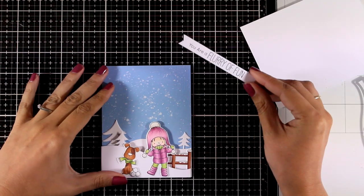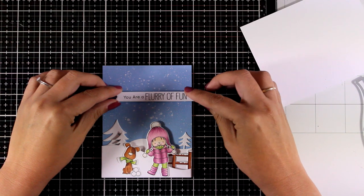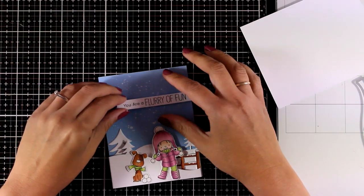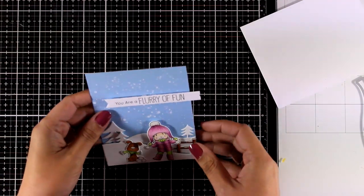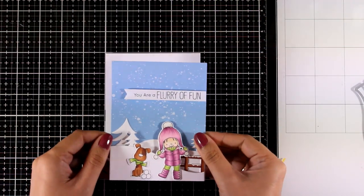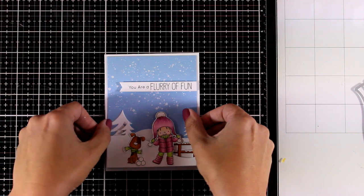All I have to do is to add the sentiment and from the same stamp set I used the one that says you are a flurry of fun which I stamped with black ink on white cardstock. I used one of my fishtail sentiment dies to cut it out. And finally I'm using my tape runner at the back and I'm going to stick it on top of my card base that's 4.25 by 5.5.